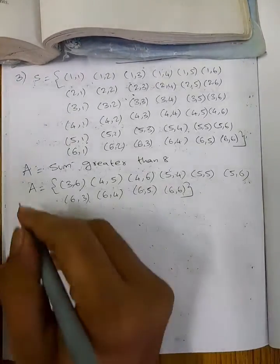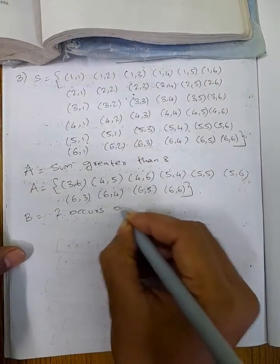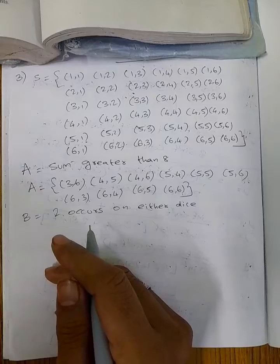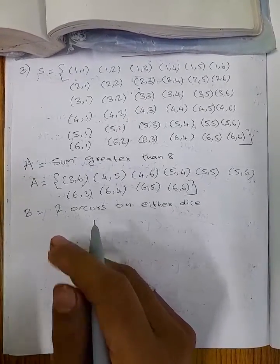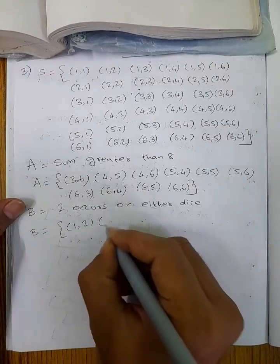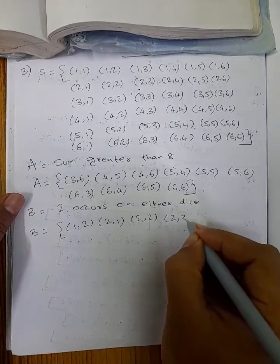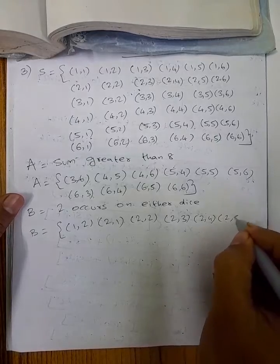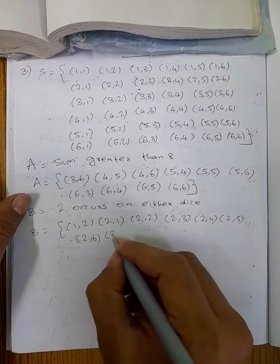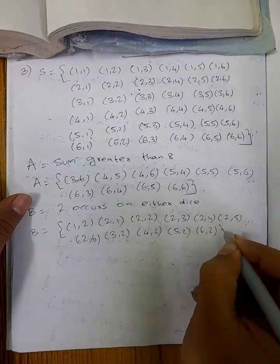Now event B — 2 occurs on either die. So B includes all pairs where either the first or second die shows 2: (1,2), (2,1), (2,2), (2,3), (2,4), (2,5), (2,6), (3,2), (4,2), (5,2), (6,2).